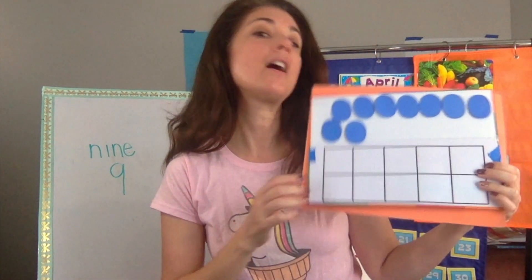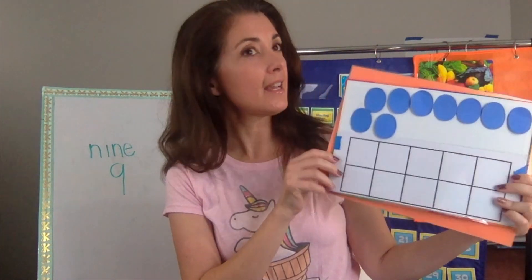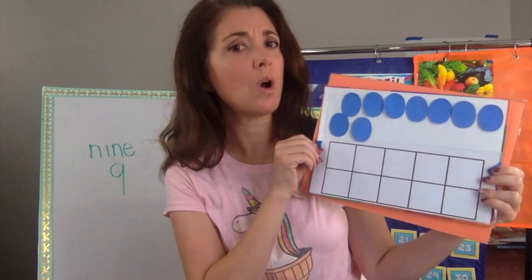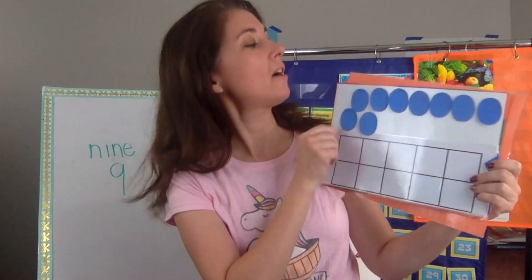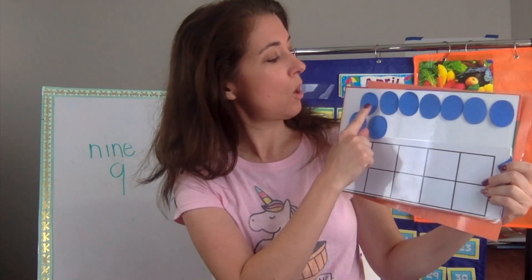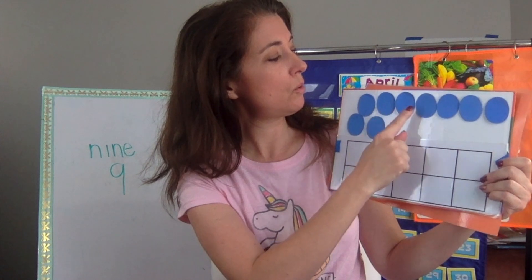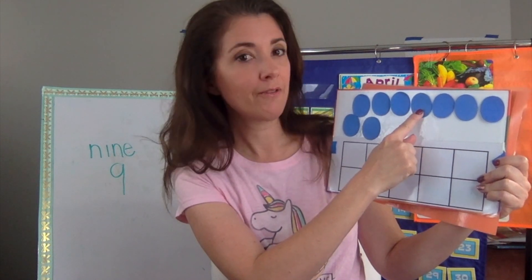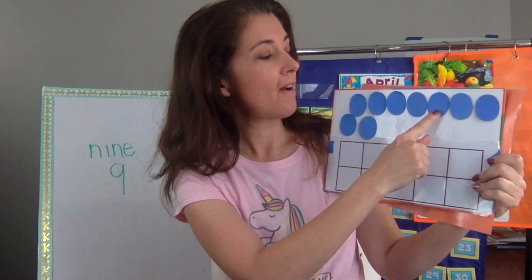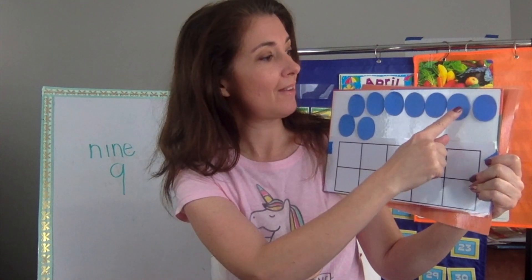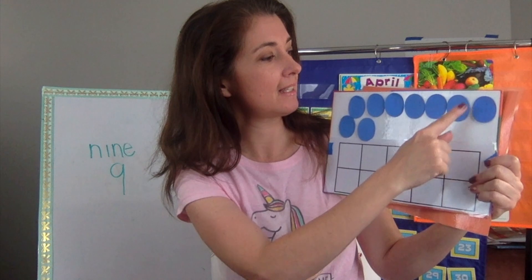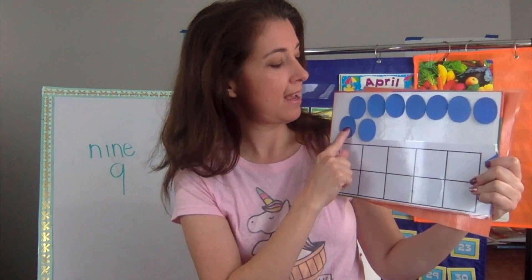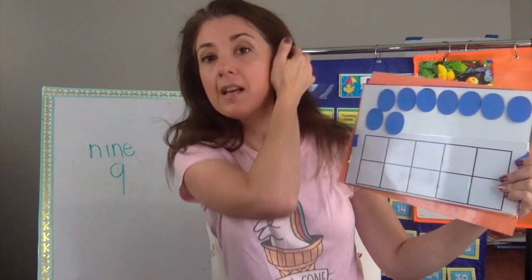And over here, I think I have nine blue ovals. Let's count them. Ready? One, two, three, four, five, six, seven, eight, nine.